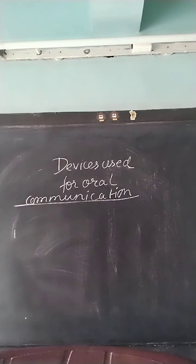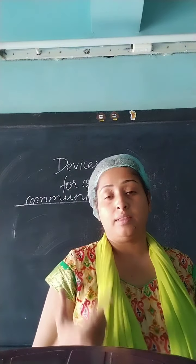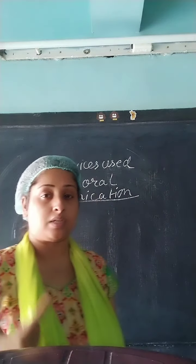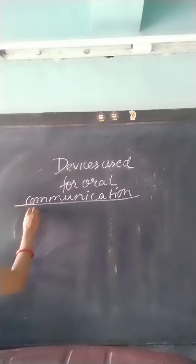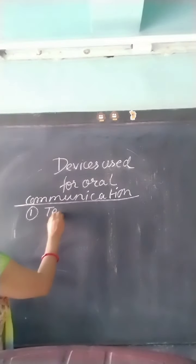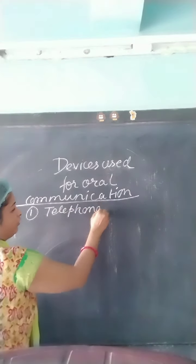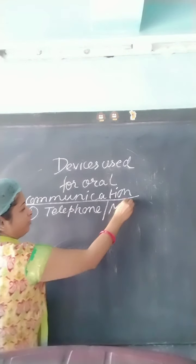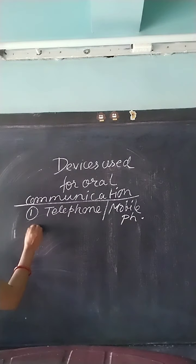Devices used for oral communication. We all know that for oral communication — that means to call somebody verbally or orally — the first device we use is a telephone or mobile phone. So the first device is a landline telephone, or you can use a mobile phone. This is the first device used for oral communication.